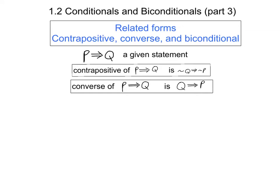So if p implies q is a given statement, then the contrapositive of p implies q is the statement not q implies not p, and the converse of p implies q is q implies p.